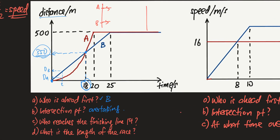The next question: who will reach the finishing line first? From the graph, cyclist A comes to a complete stop at time equals 20 seconds, while B takes 25 seconds — so A finishes the race first. The last question: what is the length of the race? This is a distance-time curve, so you do not look at the area — you look at the y-axis. Both cyclists stop at the finishing line, so the length of the race is clearly 500 meters.